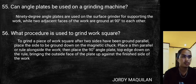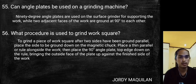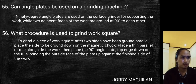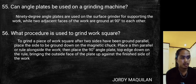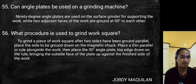Can angle plates be used on a grinding machine? 90-degree angle plates are used on the surface grinder for supporting the work while two adjacent faces of the work are ground at 90 degrees to each other. To grind a piece of work square after two sides have been ground parallel, place the side to be ground down on the magnetic chuck, place a thin parallel or rule alongside the work, then place the 90-degree angle plate top edge down to the rule, bringing the outside face against the finished side of the work.